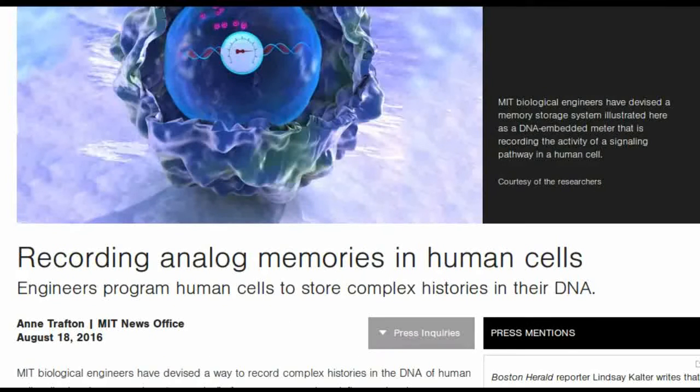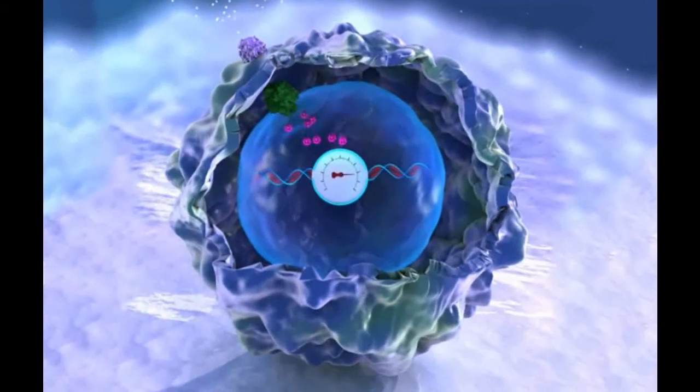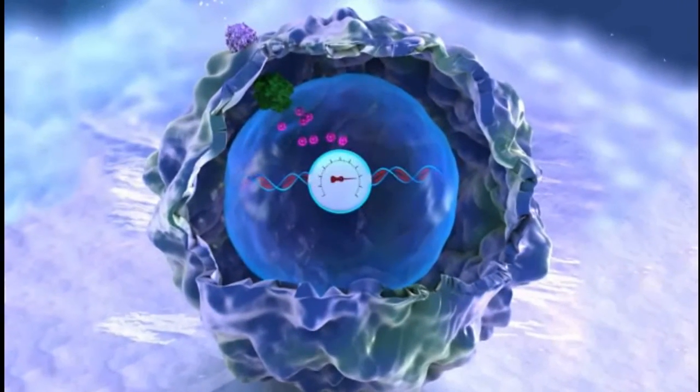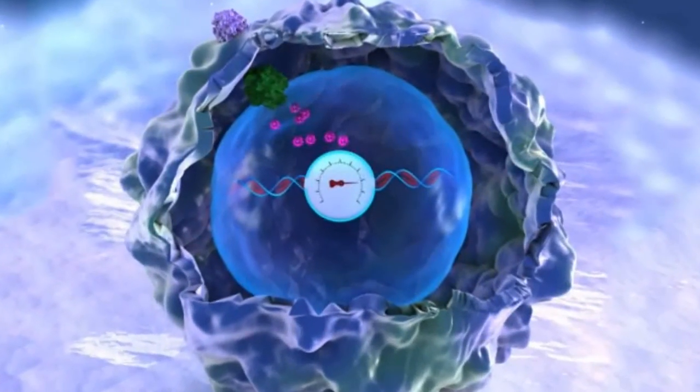To encode memories, the MIT team took a different approach. They designed guide strands that recognize the DNA that encodes the very same guide strand, creating what they call self-targeting guide RNA.